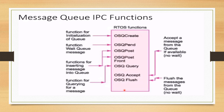The following are the message queue IPC functions provided by the operating system for servicing a queue: OSQ Create — for initializing a queue; OSQ Pend — for waiting for a queue message; OSQ Post — for posting a message into the queue; OSQ Query — for querying a message in the queue; OSQ Accept — for accepting a message from the queue; and OSQ Flush — for deleting or flushing all messages from the queue.